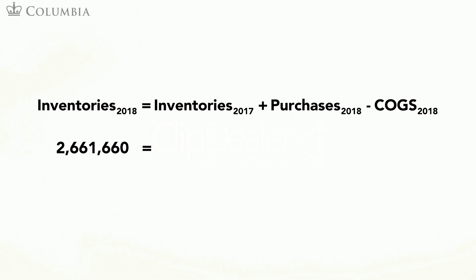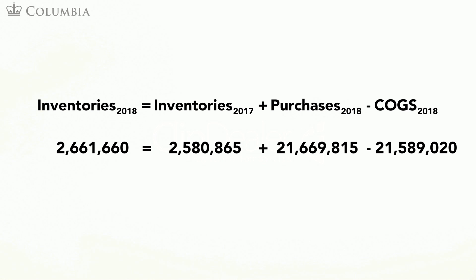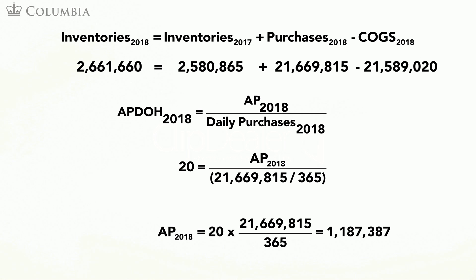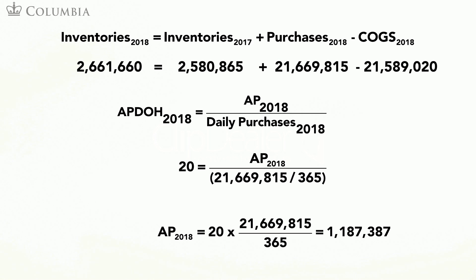We estimated the final inventory level before. We also know its initial level — it is the inventory as of the end of 2017, obtained from the 2017 balance sheet. We also estimated COGS for 2018 when computing the net operating profit. Therefore, we can use this equation to solve for the level of purchases that our assumptions imply. Finally, using this level of purchases to compute daily purchases and multiplying by accounts payable days on hand of 20 leads to our forecast of accounts payable for 2018.